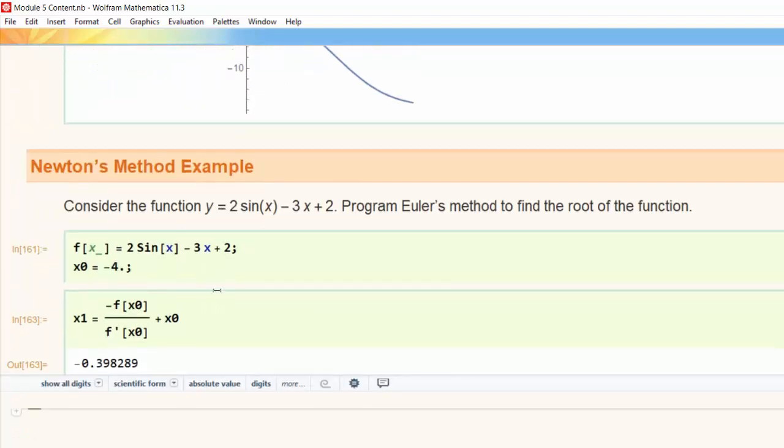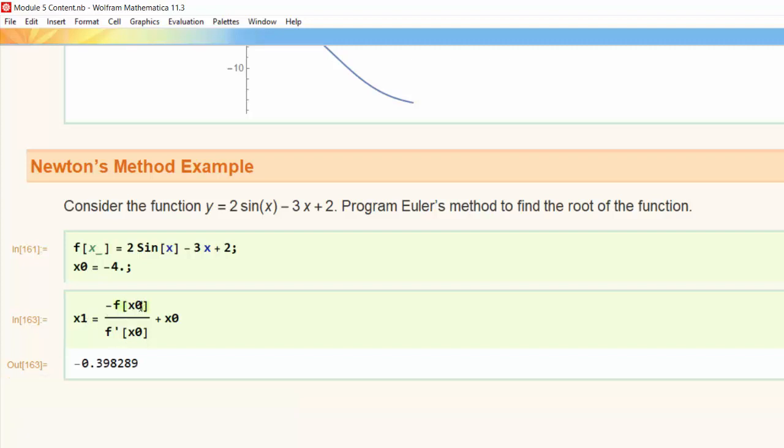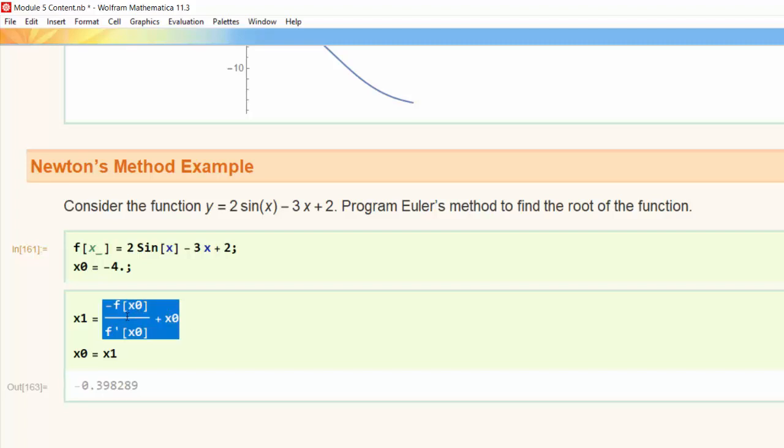All right so now I have my x₁ now how do I find my x₂? Well I could change this to x₂ and then change all my x naughts to x₁. That'd be pretty time consuming. Instead what I can do is store my x₁ value to x₀. And if I do that and then rerun the cell it will reevaluate this expression but using x₁ now.